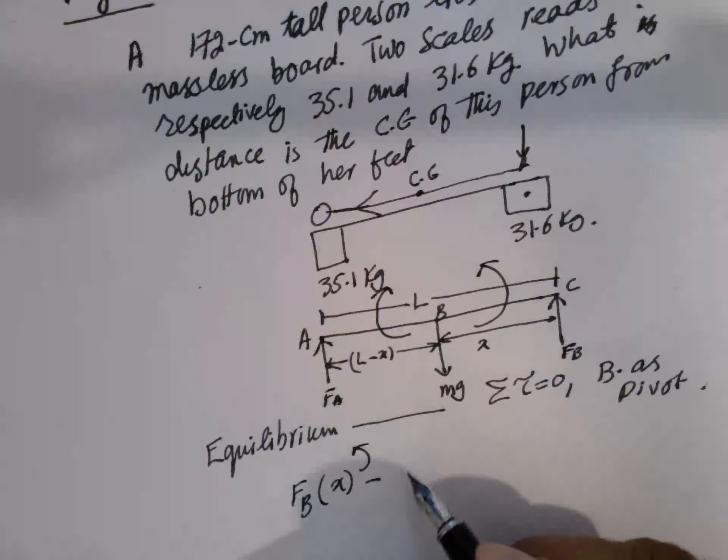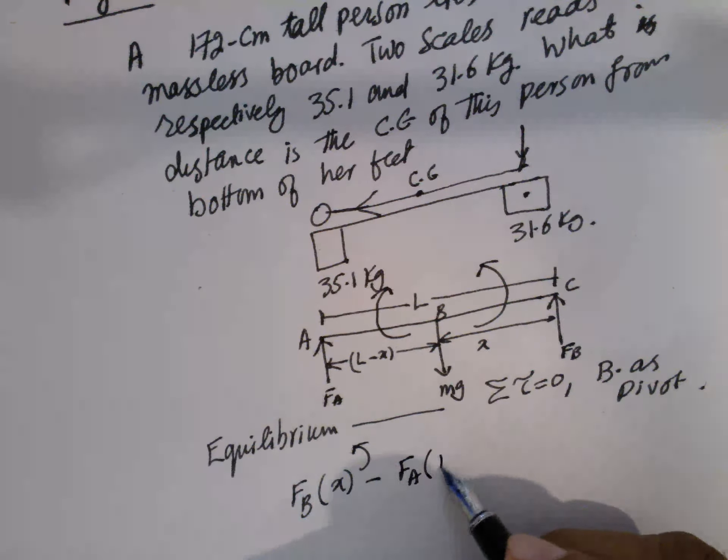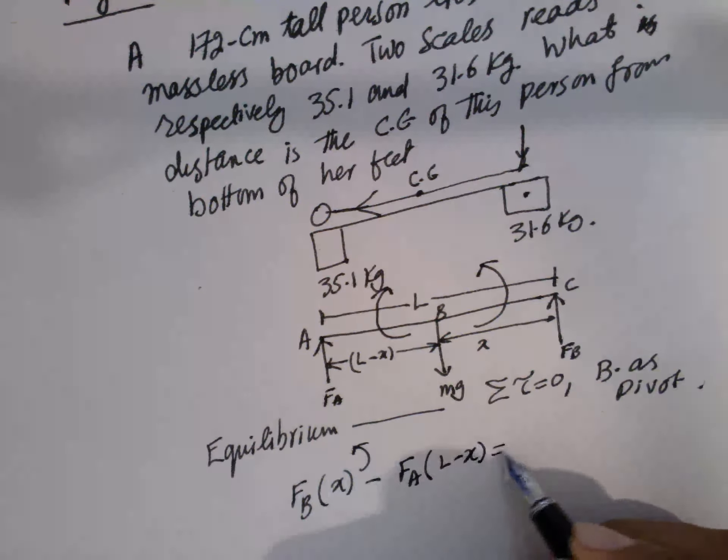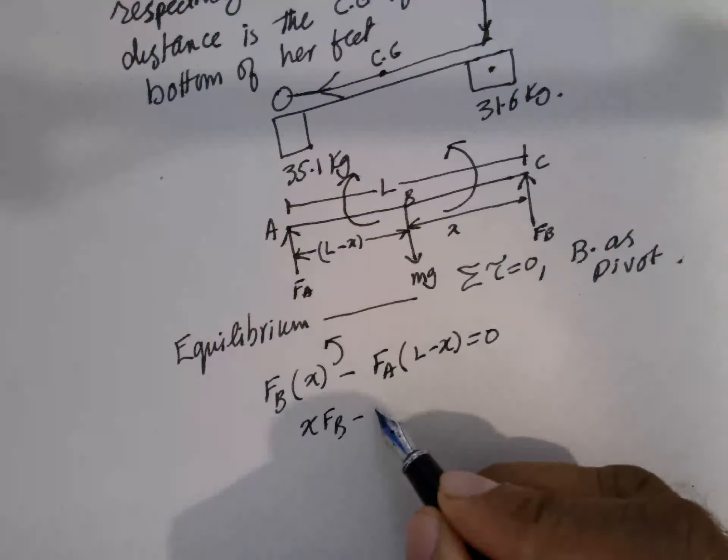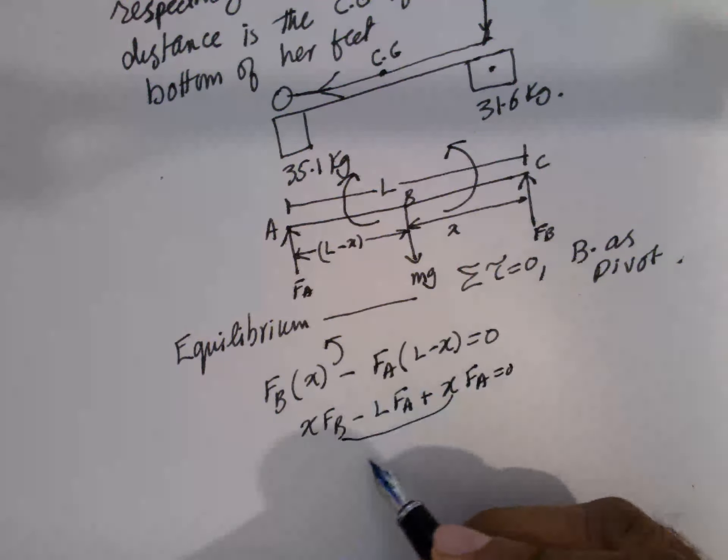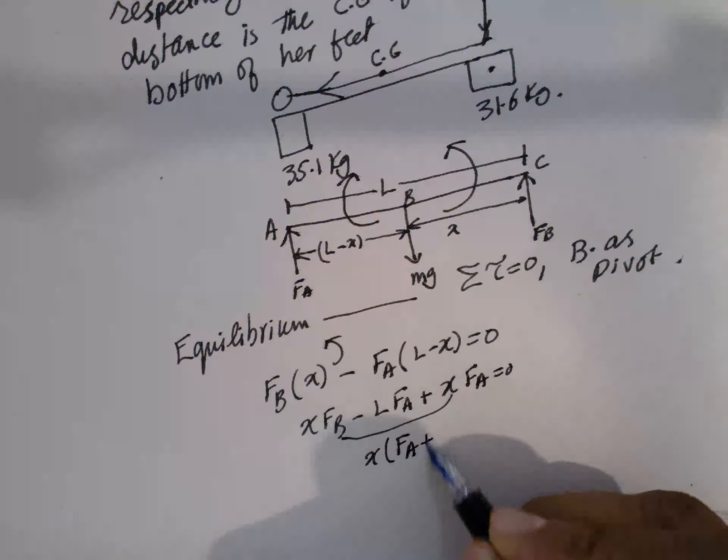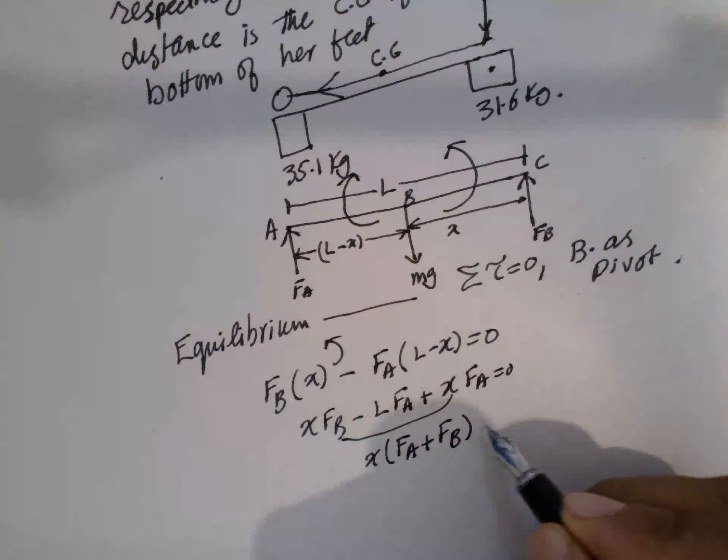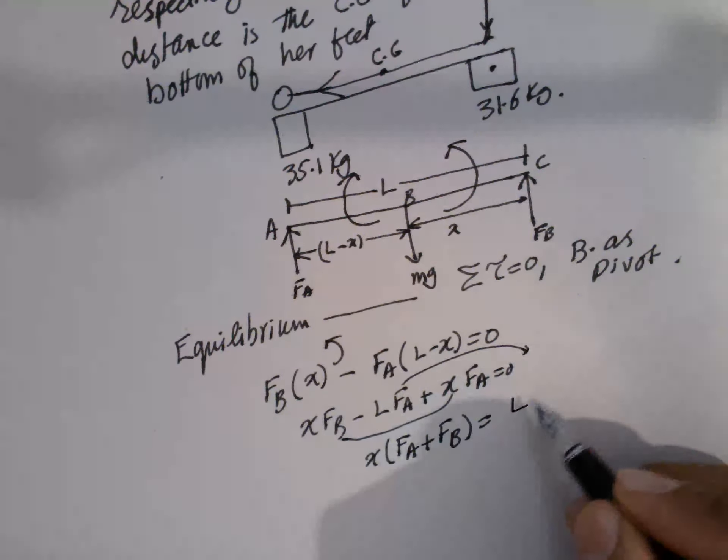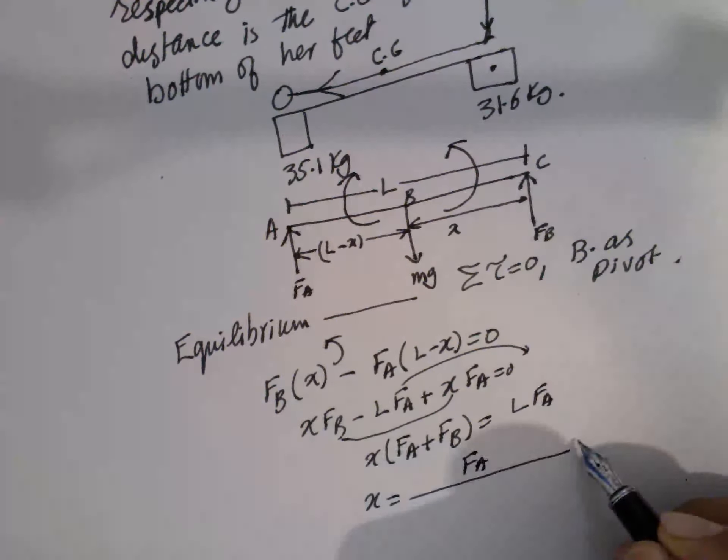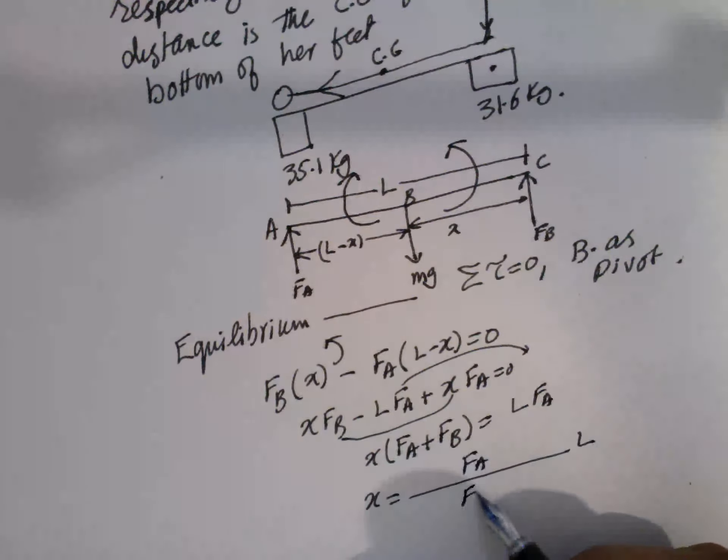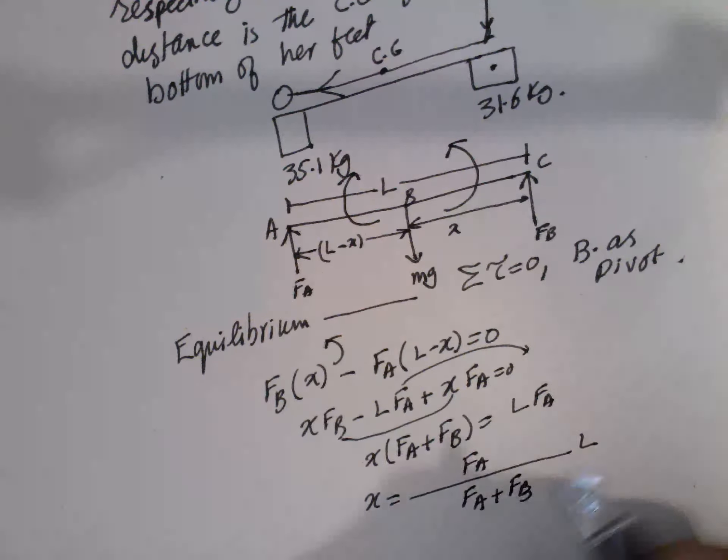Then it is negative. Negative is FA into L minus X is equal to zero. So that means X into FB minus L into FA plus X into FA is equal to zero. This one, X common, FA plus FB. And this is equal to, this will go to the other side, L FA. So that means X is equal to FA into L, FA plus FB.